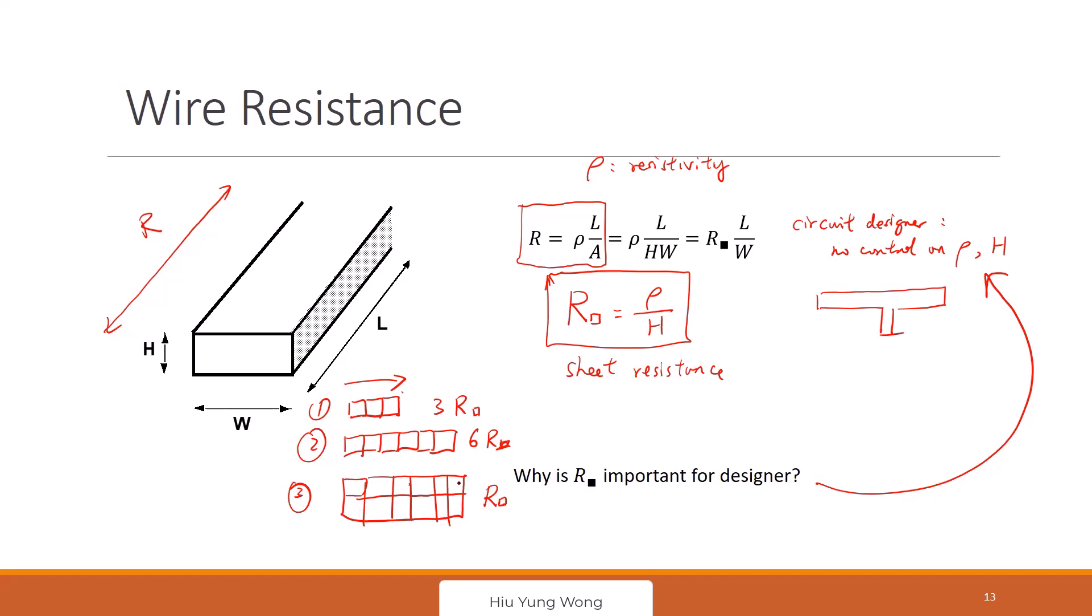So how many sheet resistance do I have? Three. How do I get it? This is equal to R square times three divided by one. This is equal to R square times six divided by one. And this one will be equals to R square times six divided by two equal to three R square.